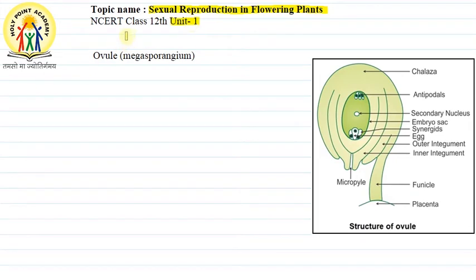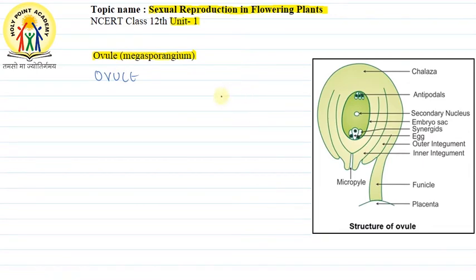In this chapter, we are going to talk about ovule, that is Megasporangia. What is ovule? Ovule is basically the Megasporangia, which is a female gametophyte present. And this female gametophyte is a female gamete.